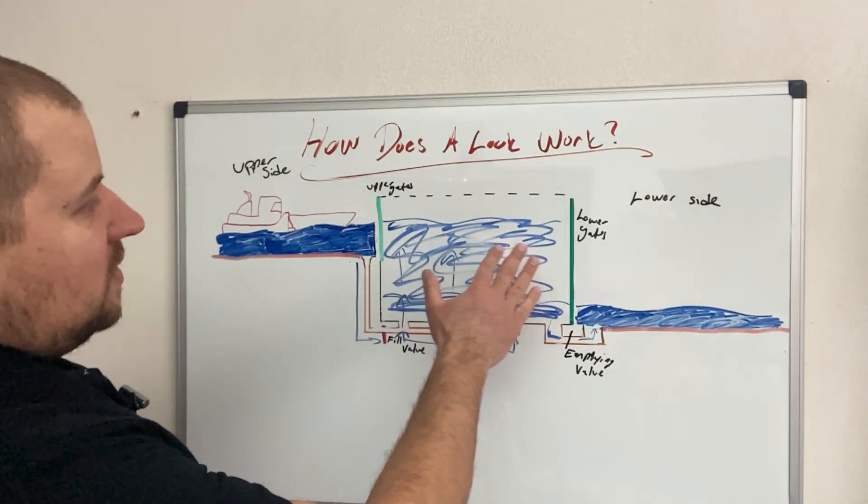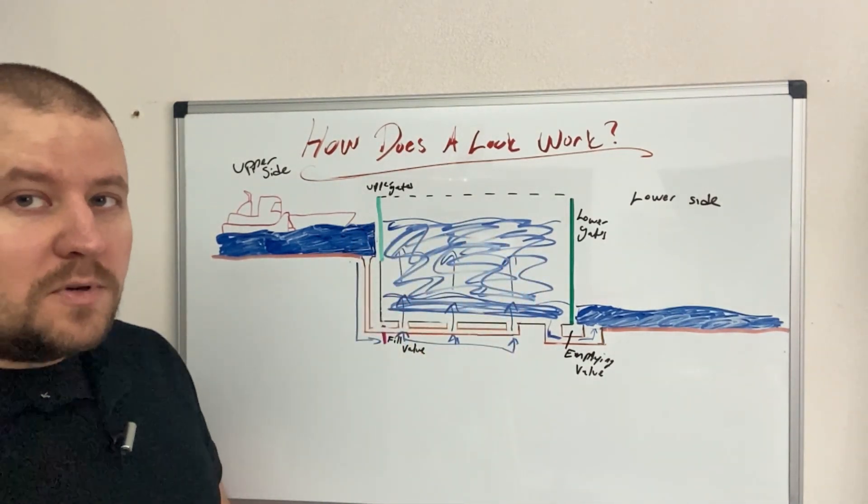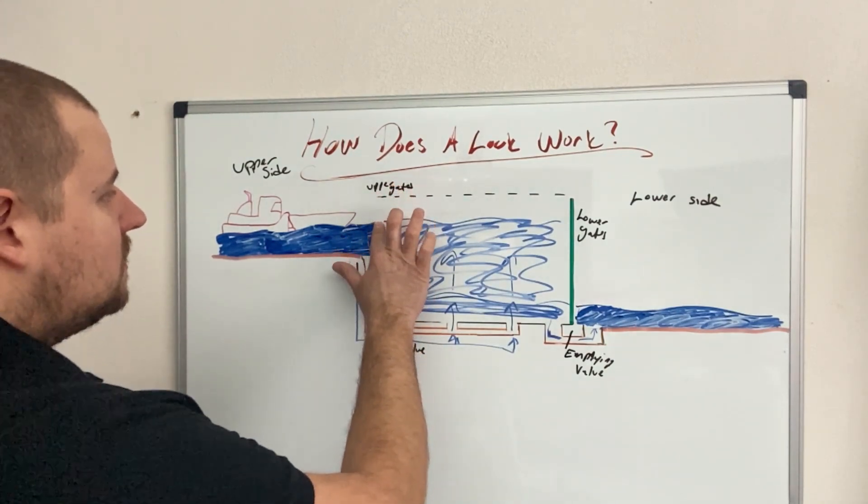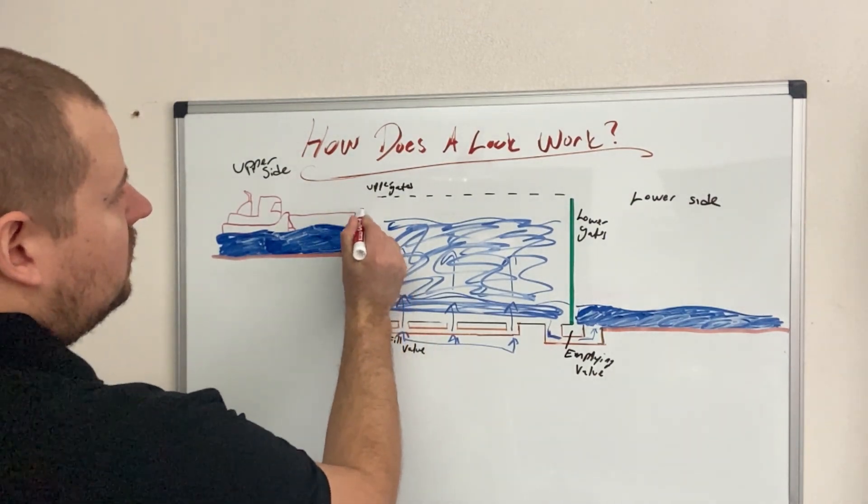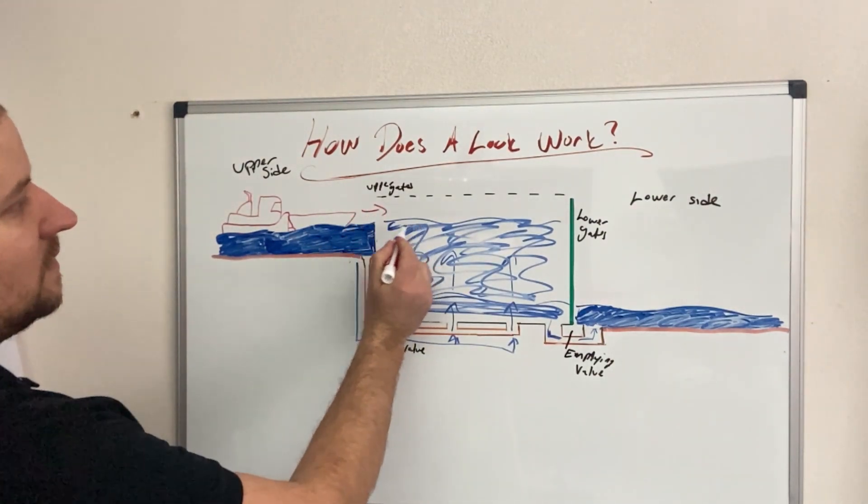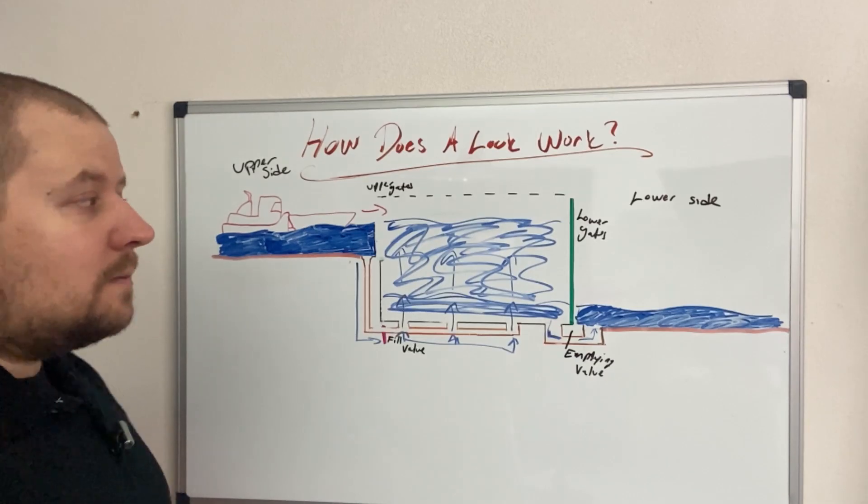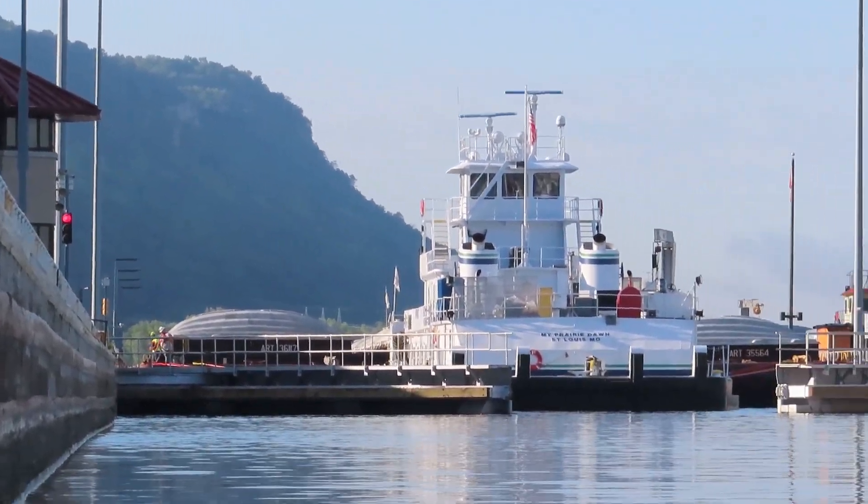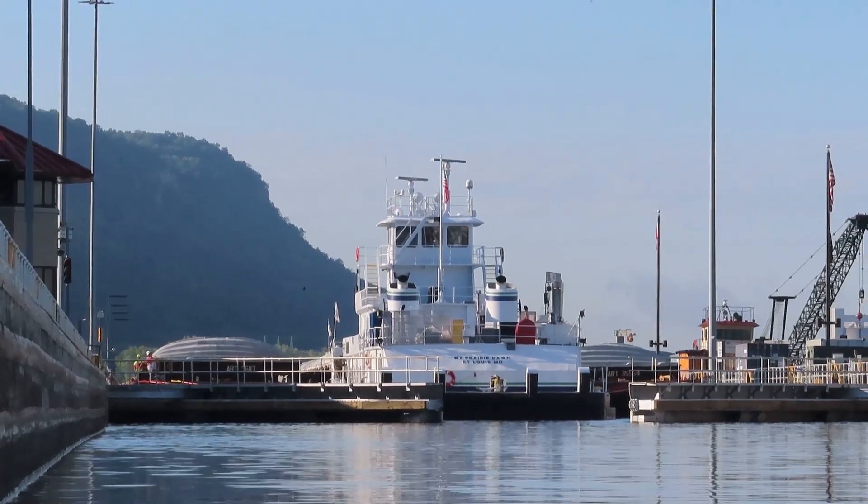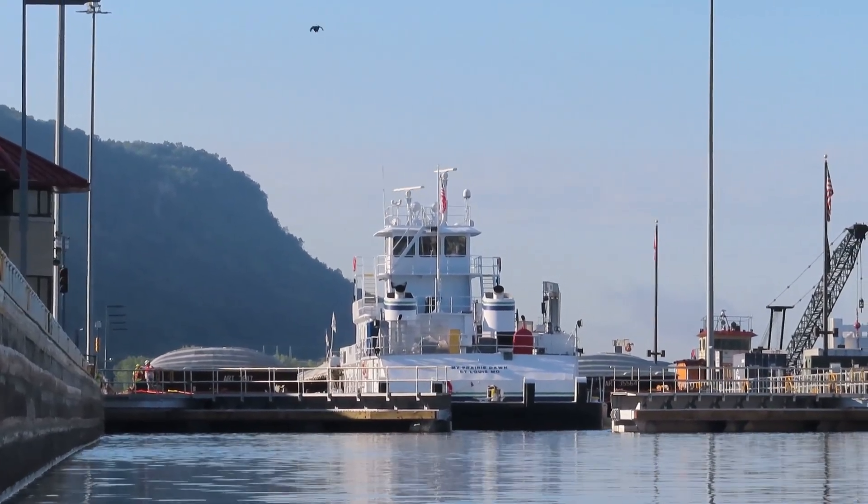Once the lock chamber reaches the same height as the water on the upper side of the river, they open the gates. And now our tow with our barges can enter the lock at the same height of the river that it came in on. So now the tow boat is actually in the lock and it is ready to go down to the lower river.